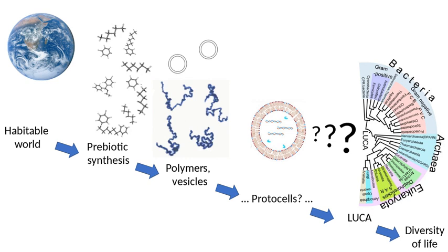Until the early 19th century, people generally believed in the ongoing spontaneous generation of certain forms of life from non-living matter. This was paired with the belief in heterogenesis — that one form of life derived from a different form, for example, bees from flowers. Classical notions of abiogenesis, now more precisely known as spontaneous generation, held that certain complex living organisms are generated by decaying organic substances.